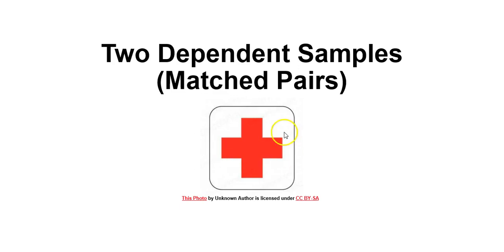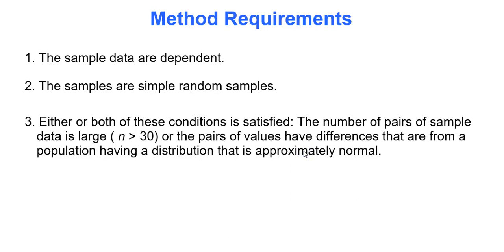In this case, the method we're about to use requires the following: The sample data are dependent, meaning they have some sort of interaction with each other. The samples are simple random samples, as always, and either or both of the following are satisfied. The number of pairs of sample data is large, meaning greater than 30, or the pairs of values have differences that are from a population that is normally distributed. There's some alignment with the requirements we've seen for previous methods.